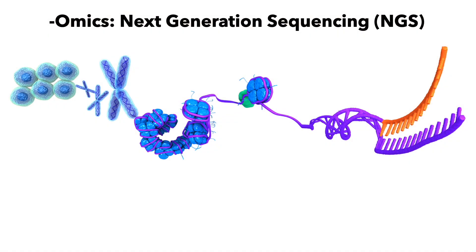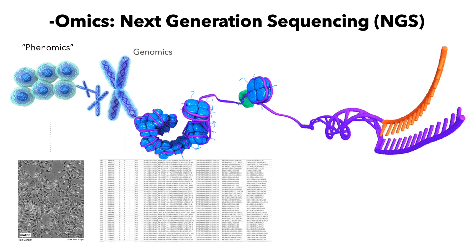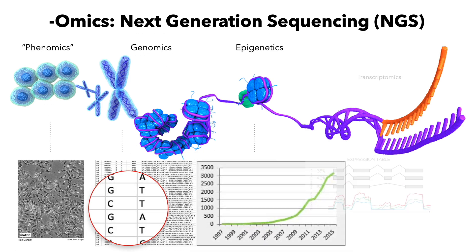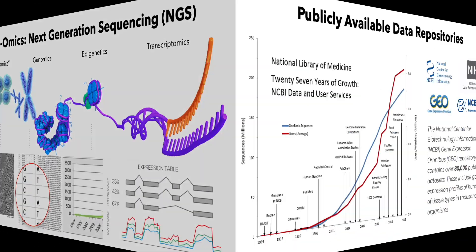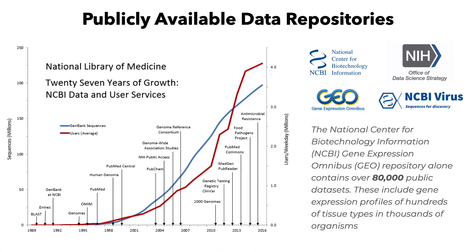A lot of breakthroughs in bioinformatics are a result of the growth and adoption of high-throughput technologies. These technologies generate billions of data points on genes, proteins, and many other molecules that can characterize biological systems, how they function, and what are the different variations from normal or different types of clinical conditions that we can describe using these techniques.